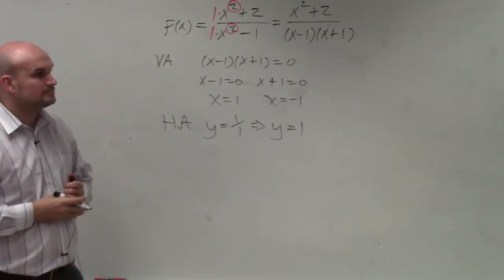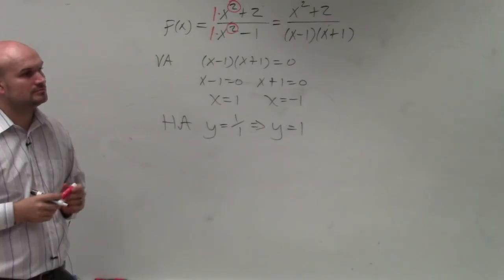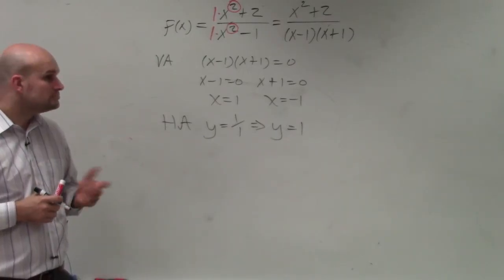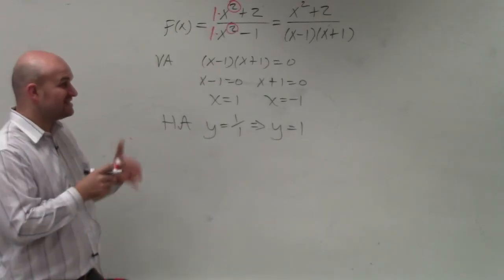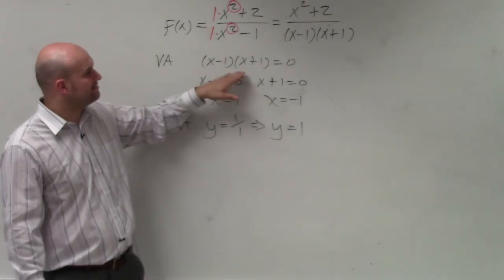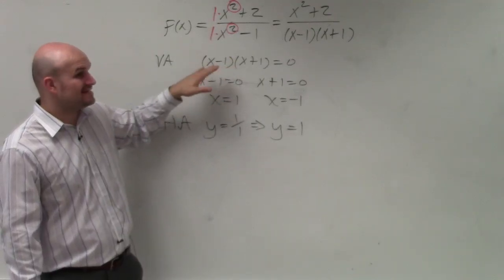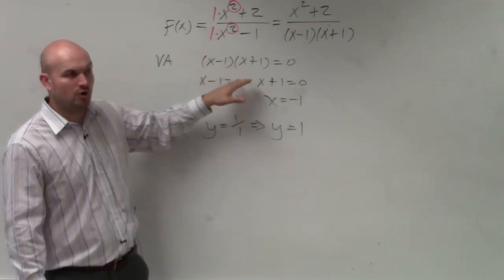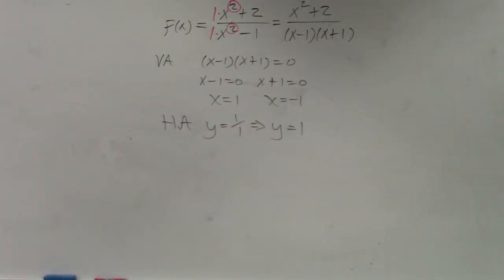Student asks: Do you also apply holes for domain restrictions? Because you had to set it to zero. Teacher responds: Basically, yeah. But the difference, same kind of thing applies. But remember what I'm going to explain next. Just because it makes the denominator zero doesn't mean it's an asymptote. It could also be a hole. And that's what I'm going to explain in the next problem.